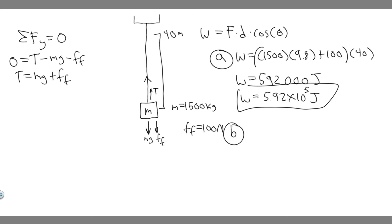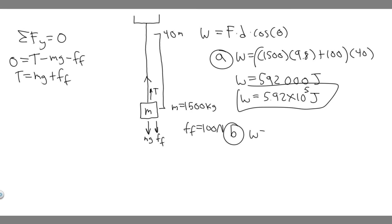Now let's move on to part B: the work done by the gravitational force. We know the gravitational force is just mg, so we know F right away. The work is going to be equal to mg times the distance, which is 40 meters, times the cosine of theta. Plugging in values: mass is 1500, g is 9.8, distance is 40.